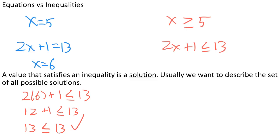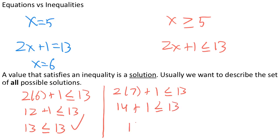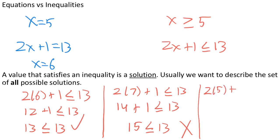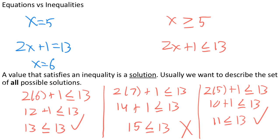Let's try another number near 6 — let's try 7. 2 times 7 plus 1 less than or equal to 13. 2 times 7 is 14; 14 plus 1 is 15, less than or equal to 13. That statement is not true, so 7 is not a solution to our inequality. Let's try 5: 2 times 5 plus 1 less than or equal to 13. 2 times 5 is 10; 10 plus 1 is 11, less than or equal to 13. That is true, so 5 is a solution to our inequality.